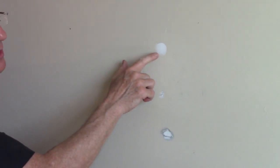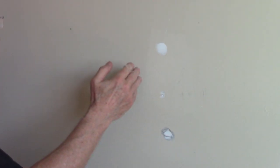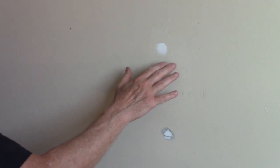For most repairs, you're only going to need one coat. It's not going to sink or sag, and generally, you're not going to have to sand.